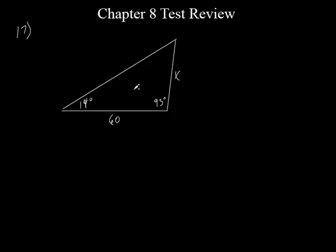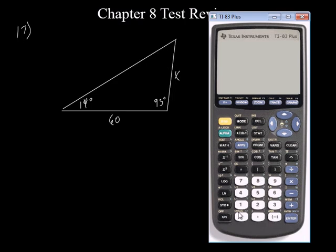I'm solving for x, and I do know the angle opposite x. What about the side of 60 — do I know the angle opposite 60? No. Do I know the side opposite 93°? No, and there's really no way to find that side right now. But I can find the third angle: 180 minus 93 minus 14 gives us 73.